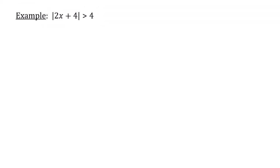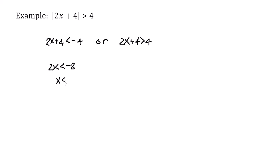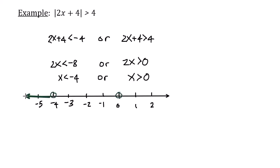What about an example where we have the absolute value of 2x plus 4 is greater than 4? Now I have two different inequalities: 2x plus 4 must be less than negative 4, or 2x plus 4 is greater than 4. Solving the first: 2x is less than negative 8, so x is less than negative 4. Solving the second: 2x is greater than 0, so x is greater than 0. In interval notation, the answer is negative infinity up to negative 4 — this time I can't include the endpoints because it's strictly greater than — union 0 up to positive infinity.